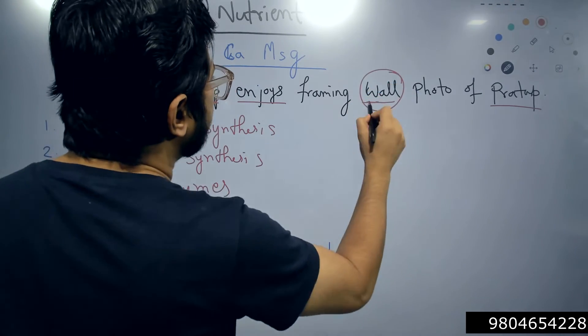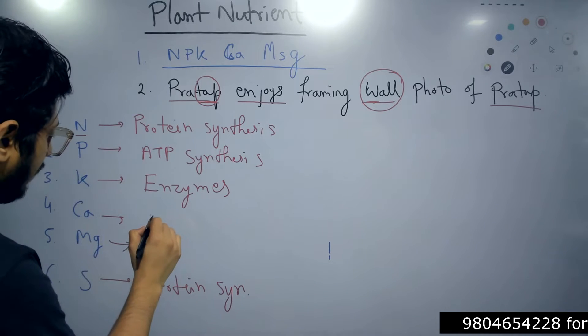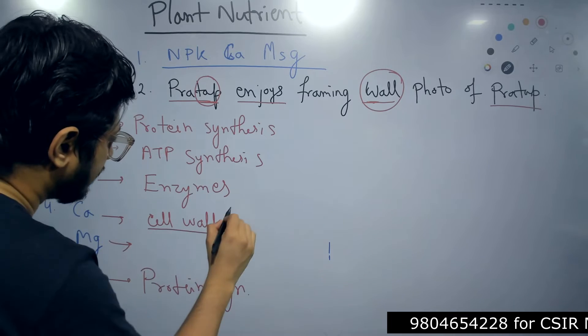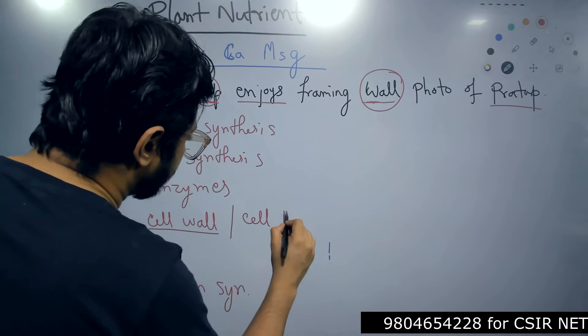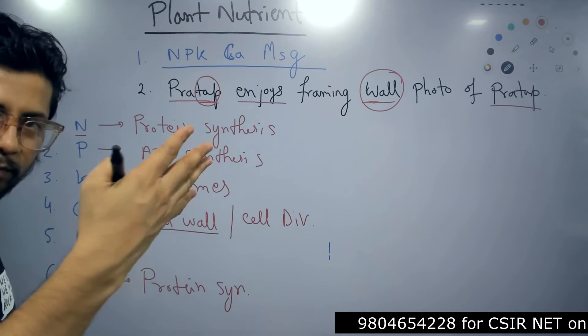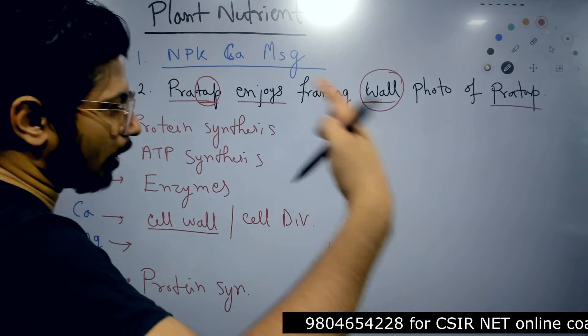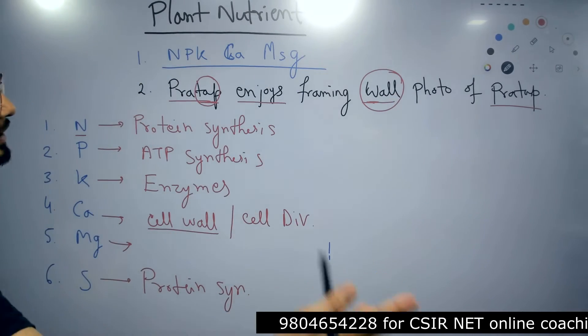Then we have wall, capital W here is wall. Wall for cell wall. Cell wall synthesis during cell division, plant cell division. Because cell wall is synthesized during plant cell division. So calcium is needed for the cell wall synthesis of the plant during the cell division of the plant.